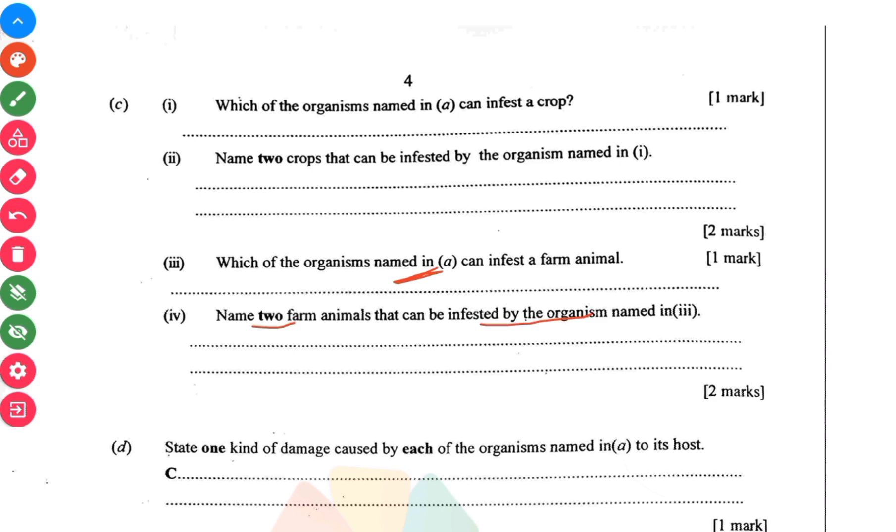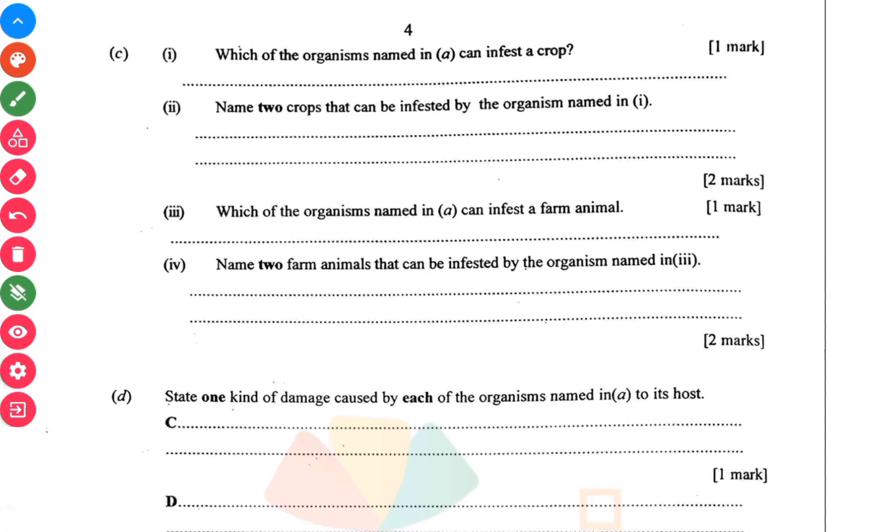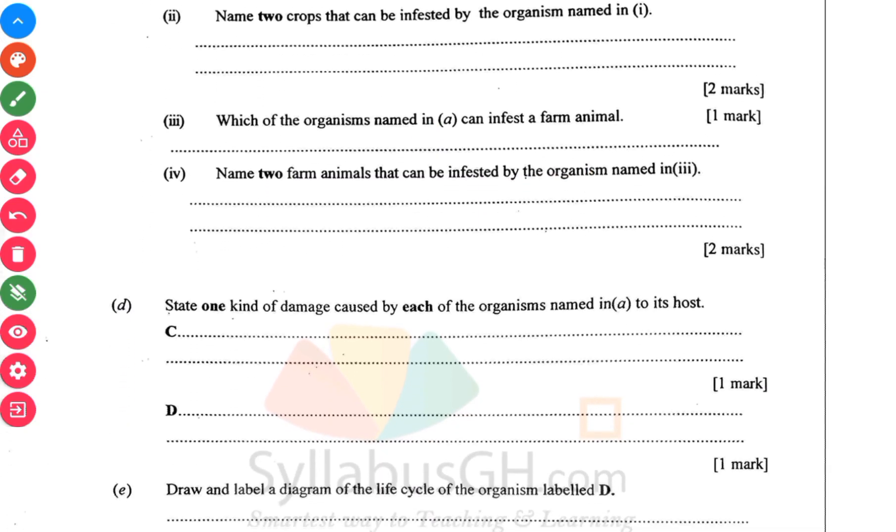D: name one kind of damage caused by each of the organisms named in A to its host. For the C, which is the tapeworm, it sucks blood in the organism. Then the D, it reduces the quality of the grain by eating the food in the grain, so the farmer wouldn't get the amount of money he's supposed to get.